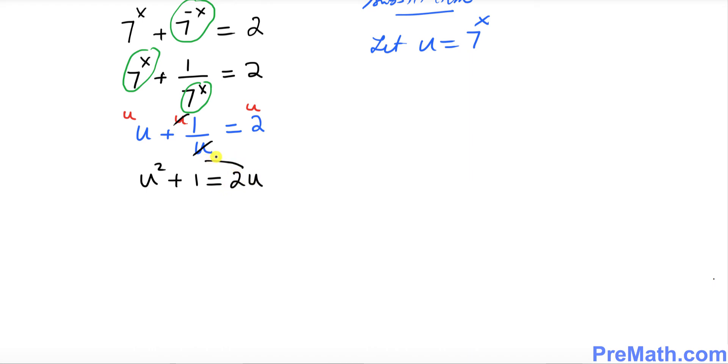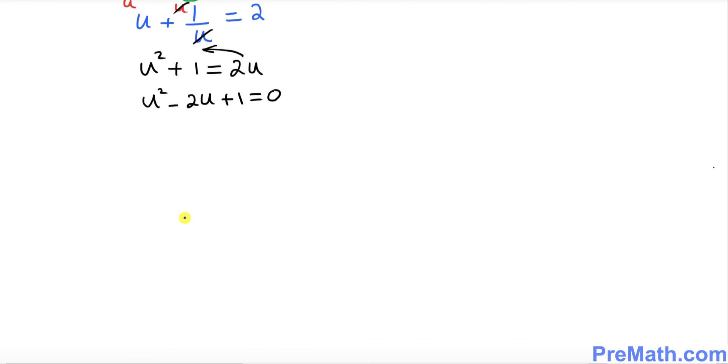I want you to move this 2u on the left hand side. So everything is going to become u squared minus 2u plus 1 equal to 0. Now you can see we got a quadratic equation with a u variable. We can easily factor it out. The possible factors are u minus 1 and u minus 1.